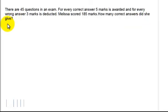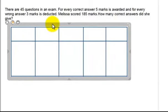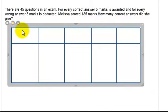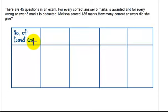For this question, we would use a table. Let me put down the table here. Now, let's write down the categories here. What we could do is first write the number of correct answers, and for every correct answer we know that 5 marks is awarded. So here we write down marks awarded.